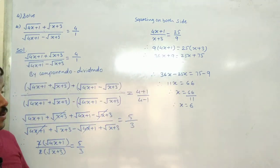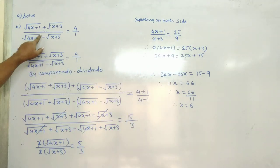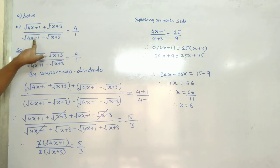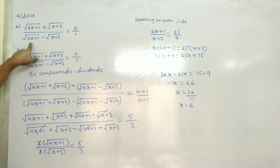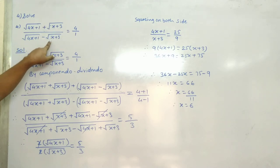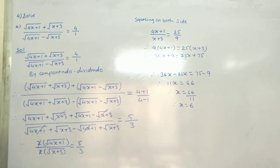Fourth question: √(4x+1) + √(x+3) upon √(4x+1) - √(x+3) is equal to 4 upon 1.